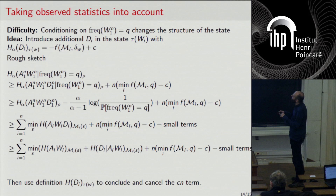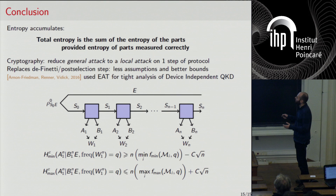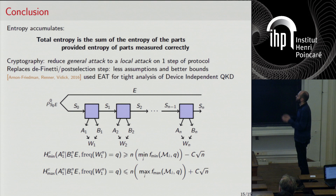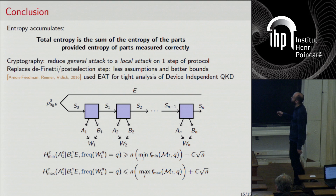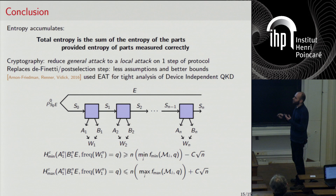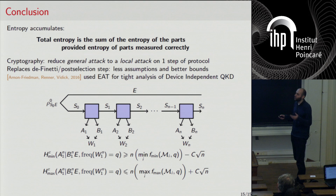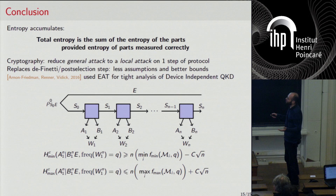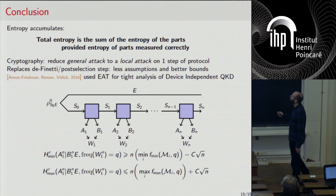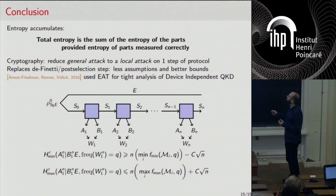The main message of this talk is that in rather generic settings, you can compute the total entropy as the sum of the entropy contributions of each part, provided the entropy of the parts is computed in the right way — by taking the worst case over all possible internal states. This originates from cryptographic motivation, in the same spirit as works on de Finetti reductions and post-selection technique, reducing a general attack to a local attack of one step of the protocol. The advantage here is fewer assumptions — no symmetry assumptions needed — and better bounds. In particular, this was used to obtain tight analysis for device-independent quantum key distribution.